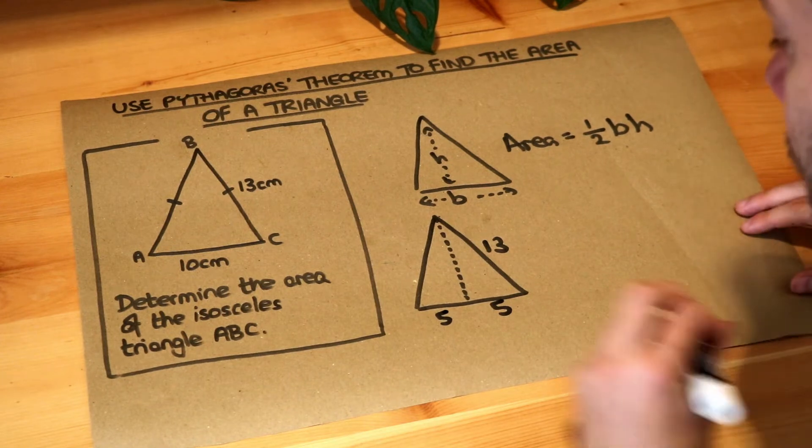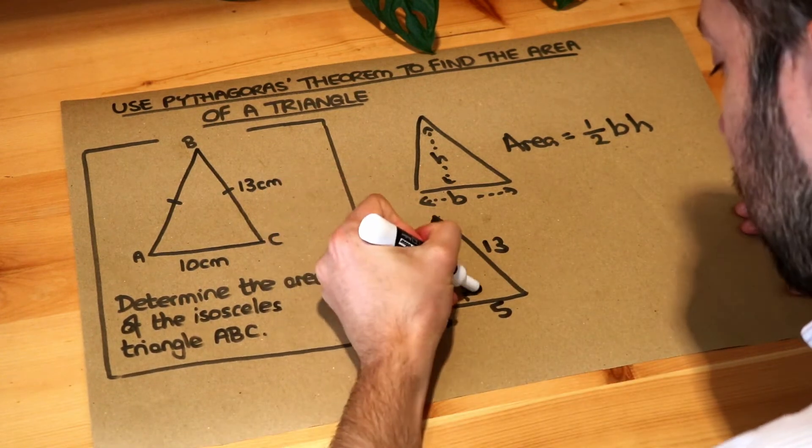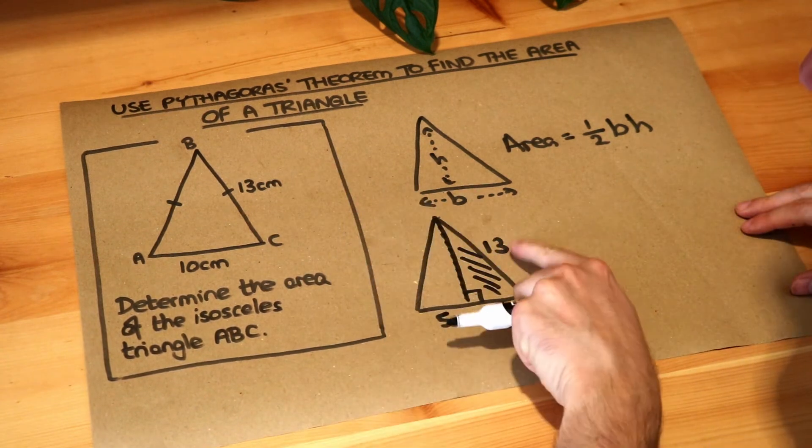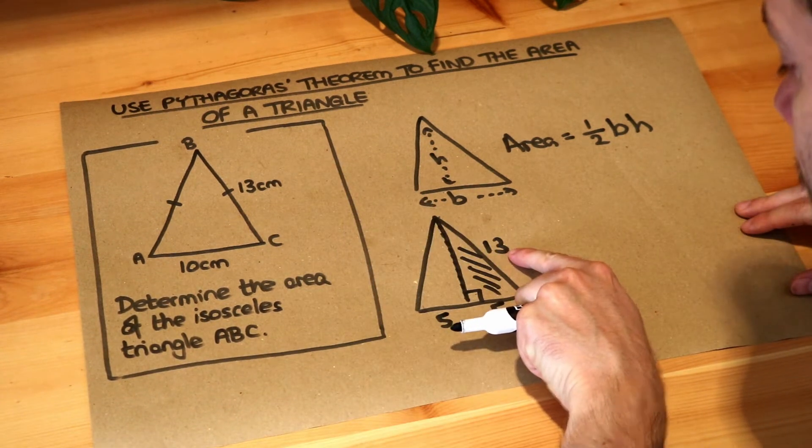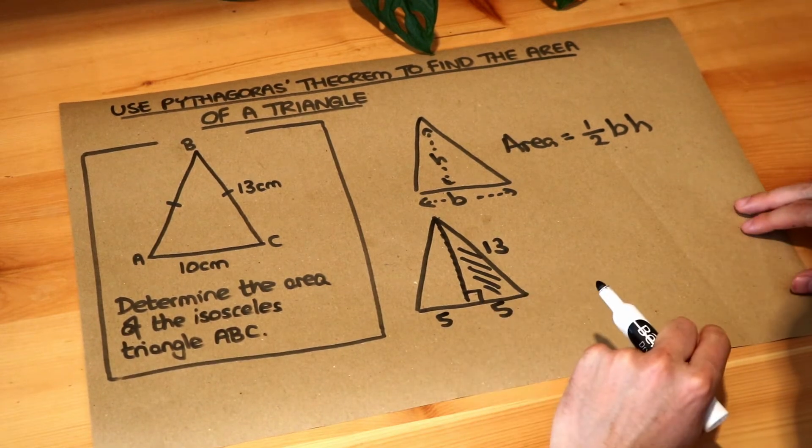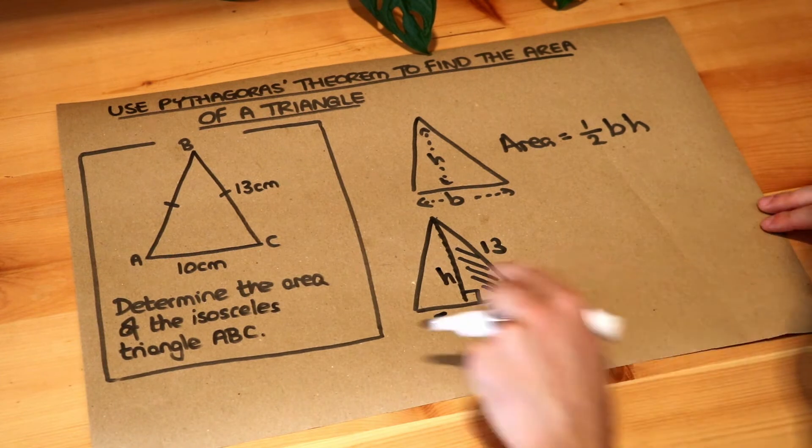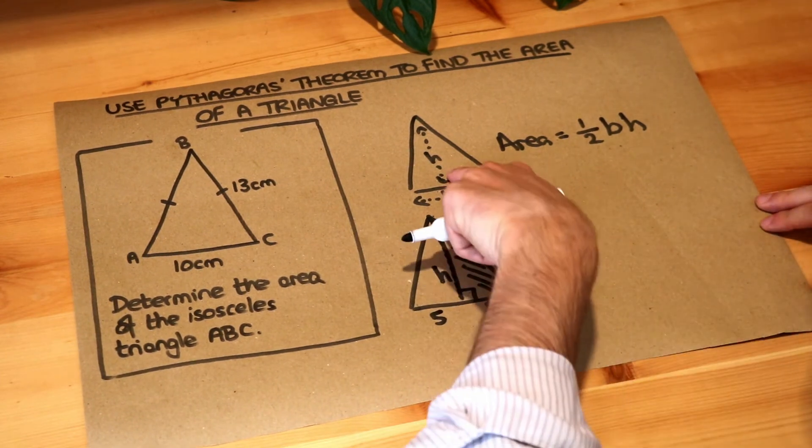Now we can use Pythagoras to find this height because we've got a right-angled triangle with the hypotenuse, the longest length 13, and one of the shorter sides. If we call this H for height, we can use Pythagoras theorem to work out the height and then find the area.